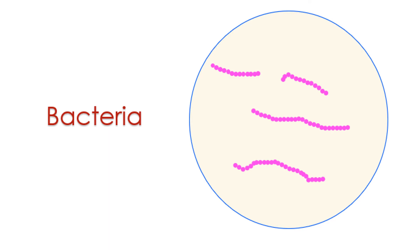If there is infection of the aortic valve, blood culture is obtained to identify the microorganism responsible and to decide on appropriate treatment. A prolonged course of antimicrobial treatment is needed for infections of the aortic valve. Occasionally, if the valve is severely damaged or when there is a complication, the valve may have to be replaced by surgery to eradicate the infection.